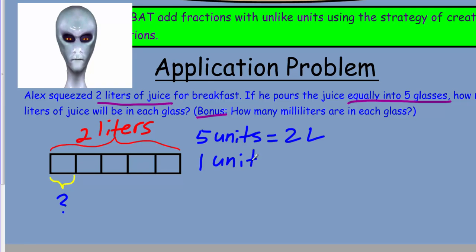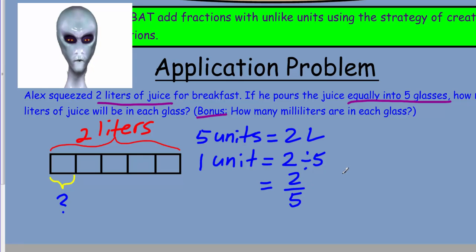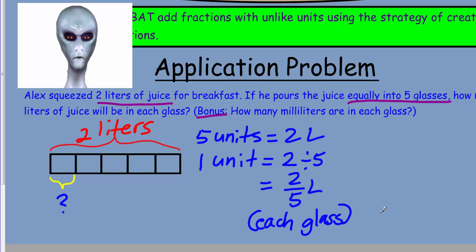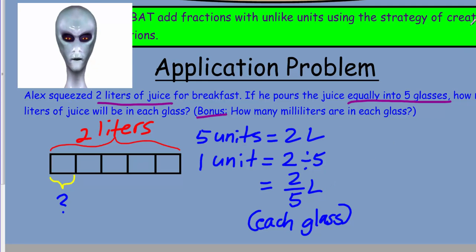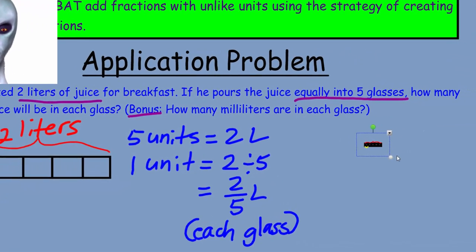In order to get one unit — how many liters of juice will be in each glass — we take two liters and divide by five. Two divided by five gives us the simple fraction two-fifths. So two-fifths of a liter will be in each glass.